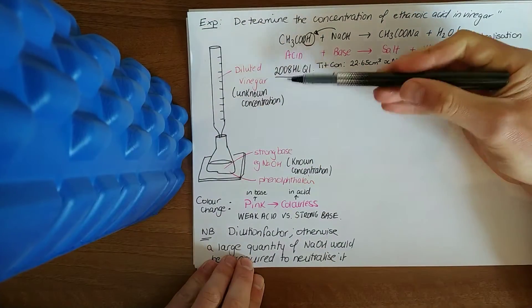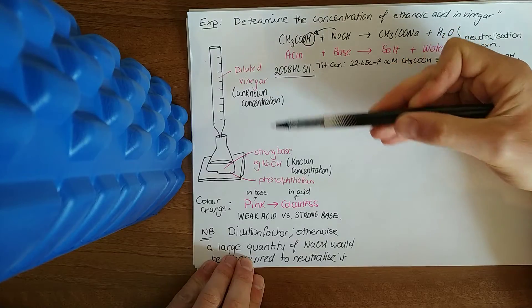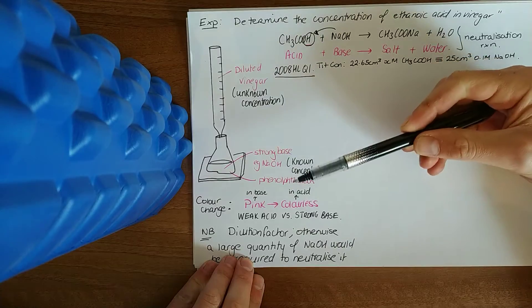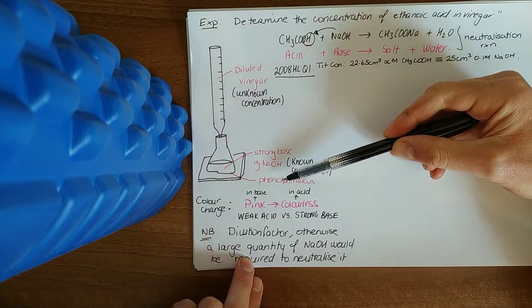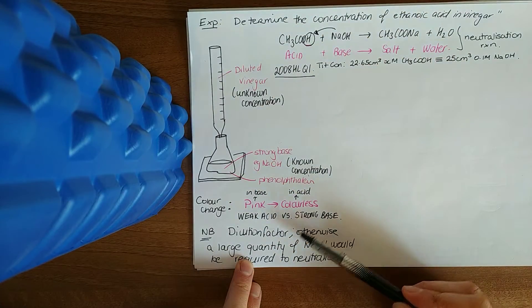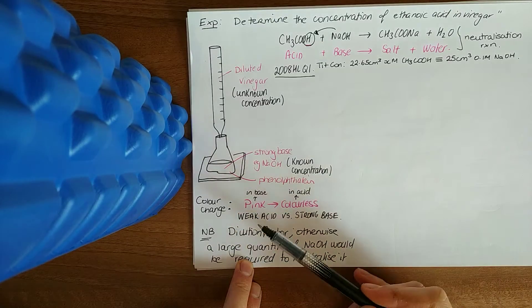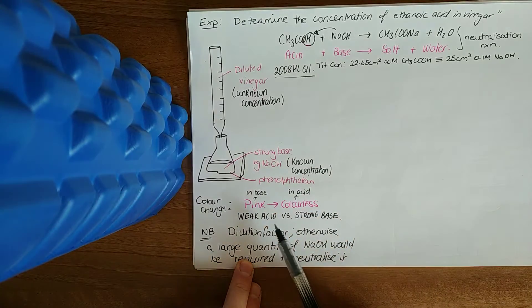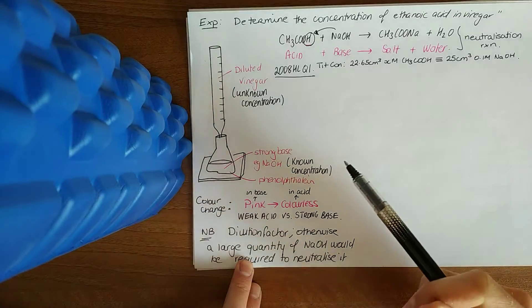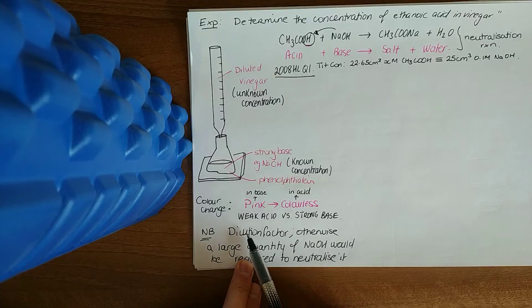You're working out the concentration of ethanoic acid in vinegar with the following setup: an unknown concentration of diluted vinegar against a strong base such as sodium hydroxide. The indicator you use is phenolphthalein because it's a weak acid-strong base titration. In a weak acid-strong base titration you always use phenolphthalein because the color change lies within the vertical part of the curve. It's pink at the start and colorless from that one extra drop of acid that turns it slightly acidic.